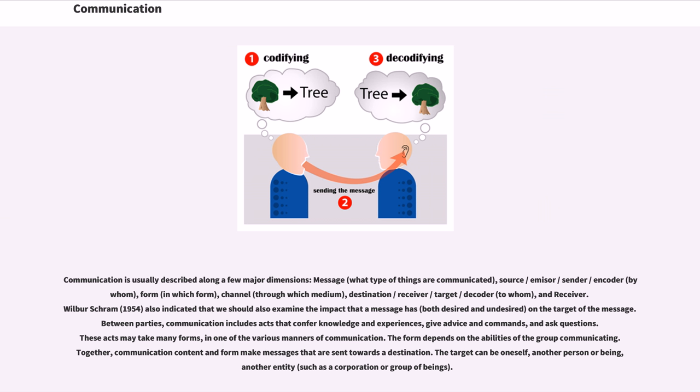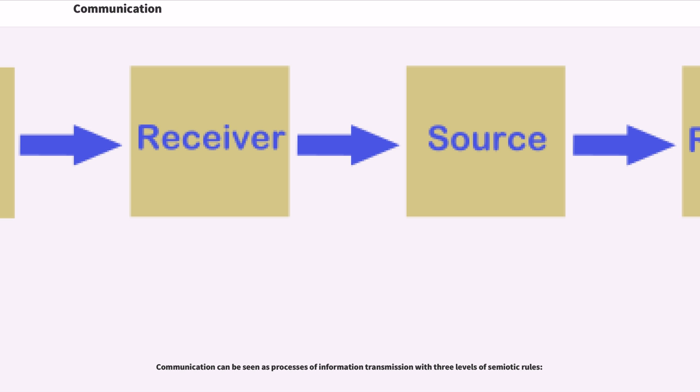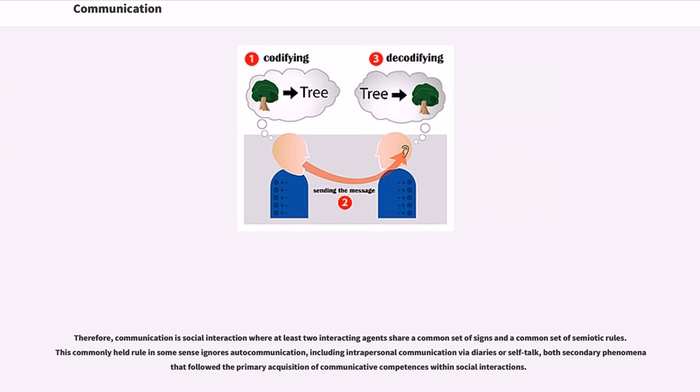Between parties, communication includes acts that confer knowledge and experiences, give advice and commands, and ask questions. These acts may take many forms in one of the various manners of communication. The form depends on the abilities of the group communicating. Together, communication content and form make messages that are sent towards a destination. The target can be oneself, another person or being, another entity such as a corporation or group of beings. Communication can be seen as processes of information transmission with three levels of semiotic rules. Therefore, communication is social interaction where at least two interacting agents share a common set of signs and a common set of semiotic rules. This commonly held rule in some sense ignores auto-communication, including intrapersonal communication via diaries or self-talk, both secondary phenomena that followed the primary acquisition of communicative competences within social interactions.